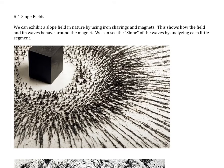Hi, this is section 6.1, and we're dealing with slope fields. Slope fields are mathematical representations of possibly different slopes that occur in the world. Here's one example: magnetism.